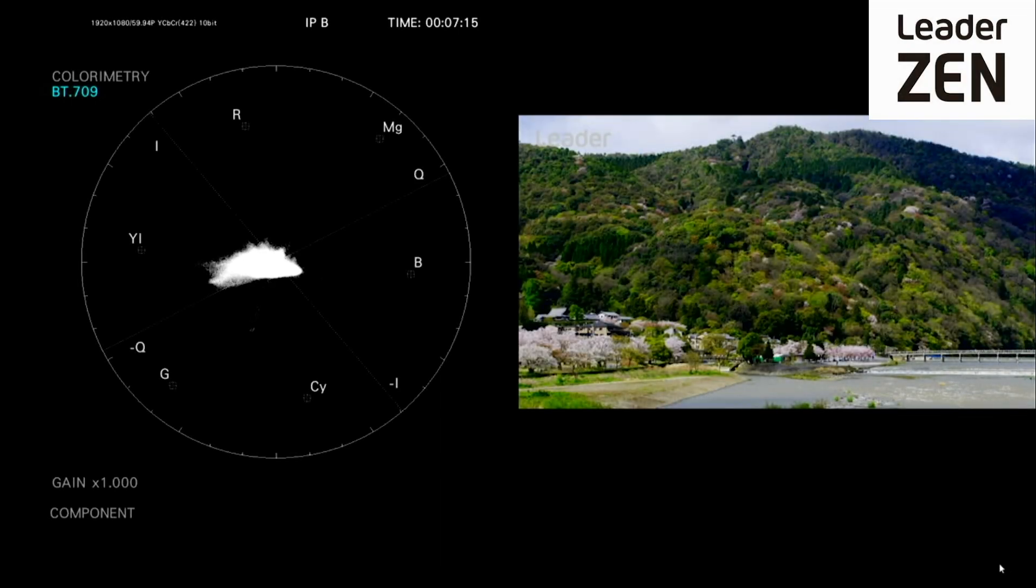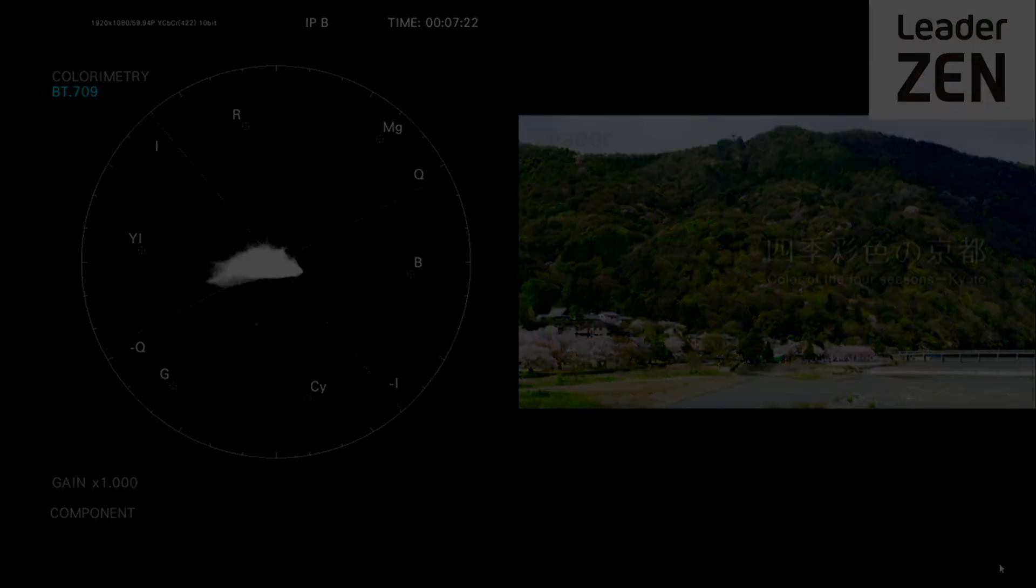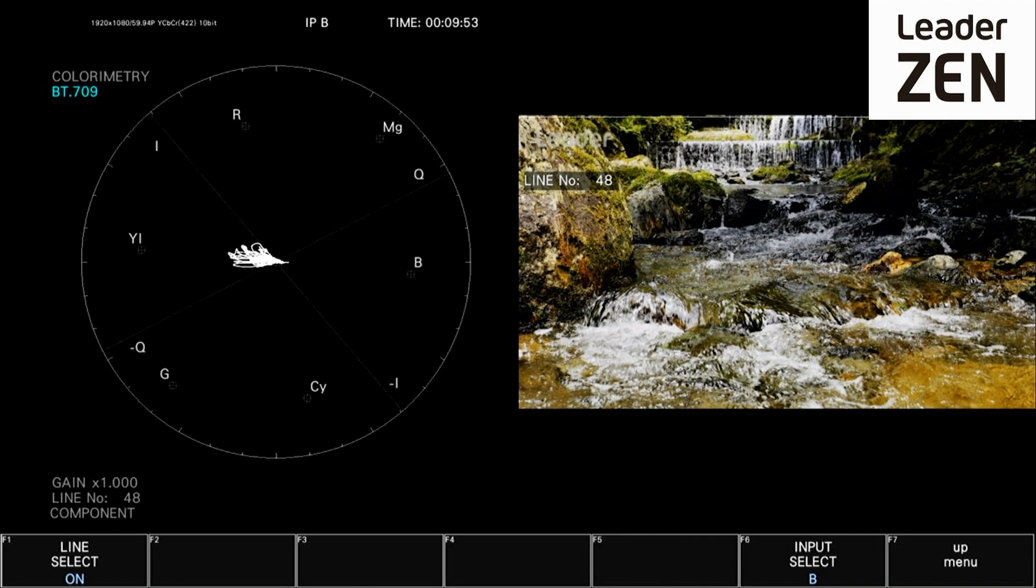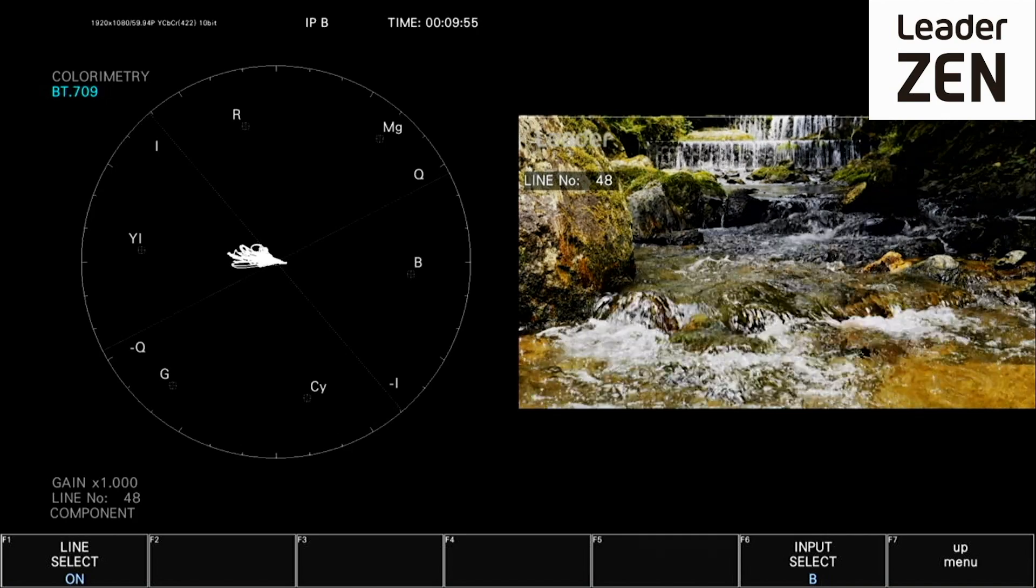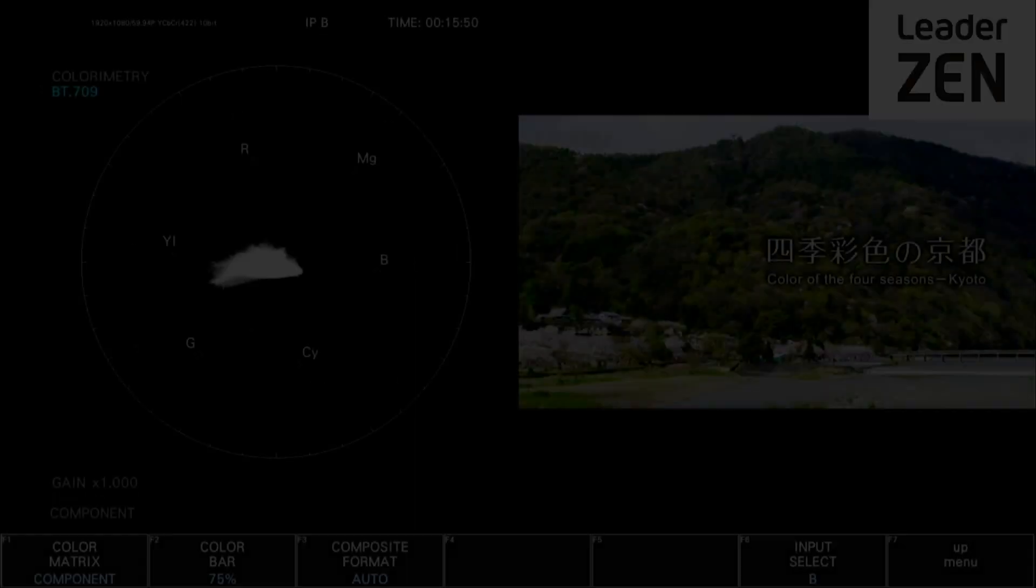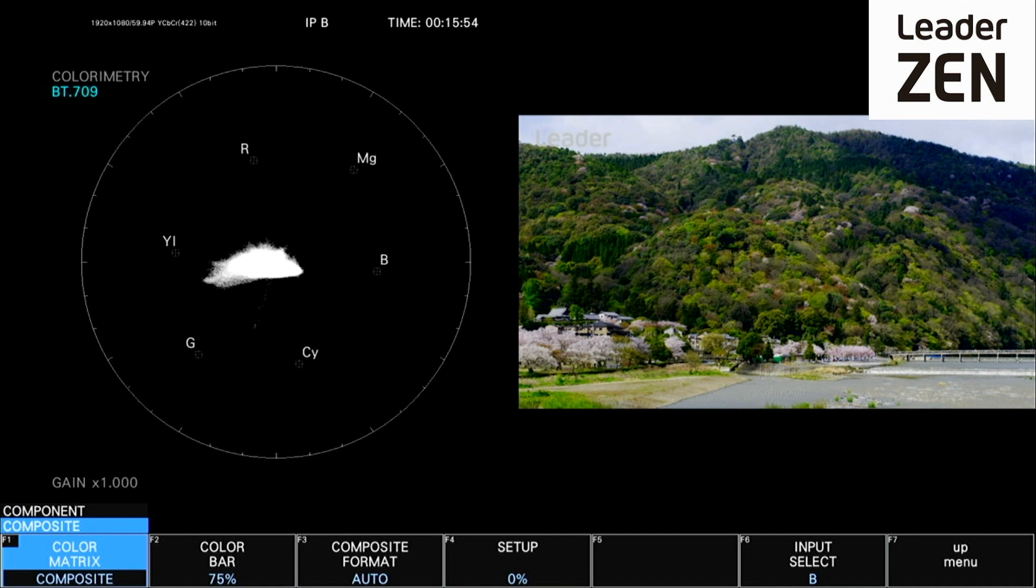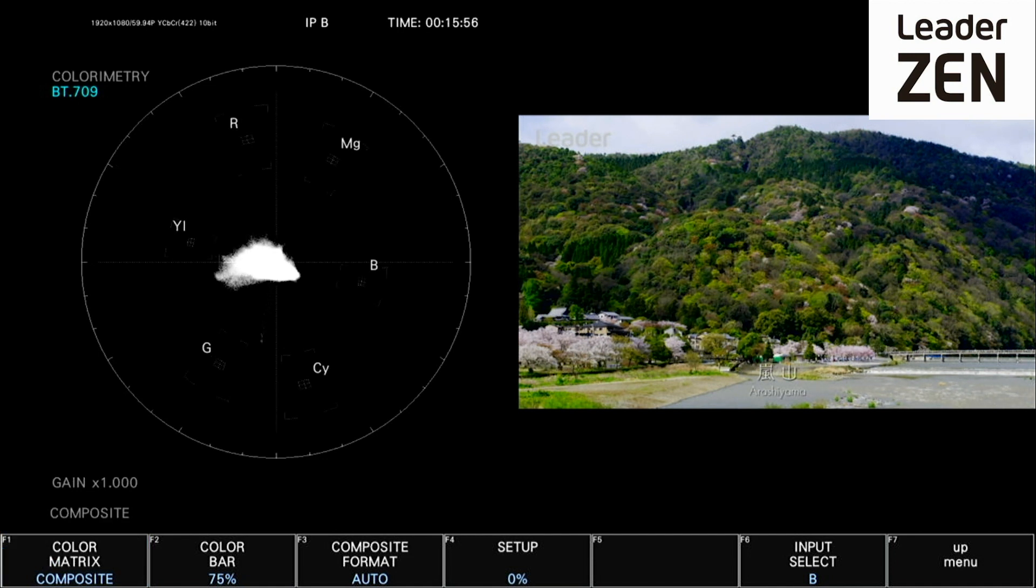The Leader Zen series products can simultaneously display the vectorscope and picture image. The vectorscope also supports the capability to zoom in to show individual lines of video signal. The vectorscope display also supports both composite and component color matrix display.